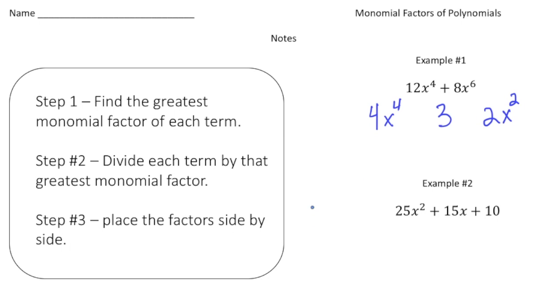And finally we're going to place the factors side by side. So remember 4x to the fourth, that was our first factor, and this is actually missing a plus sign here. And 3 plus 2x squared is a second factor. So this is what we're looking for right here: 4x to the fourth times 3 plus 2x squared. And remember this is the GCF. That's what we want.